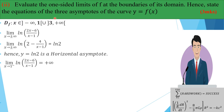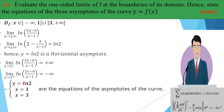At x = 3, we take the one-sided limit from above, since the function does not exist to the left of 3. Substituting a value slightly greater than 3, say 3.1, and simplifying inside the ln gives a negative number, confirming the limit is negative infinity. Therefore x = 3 is also a vertical asymptote. The three asymptotes are y = ln(2), x = 1, and x = 3.